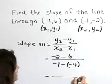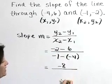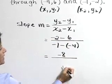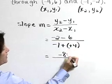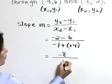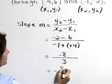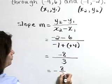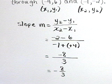Simplifying in the numerator, negative 2 minus 6 is negative 8. In the denominator, negative 1 minus a negative 4 becomes negative 1 plus 4, which is positive 3. So the slope is negative 8 thirds. The slope of the line through the points negative 4, 6 and negative 1, negative 2 is negative 8 thirds.